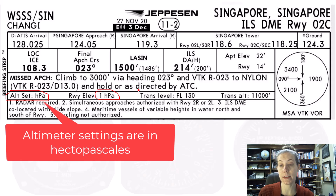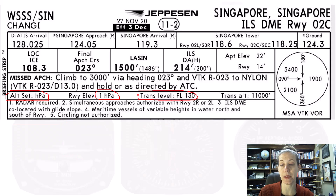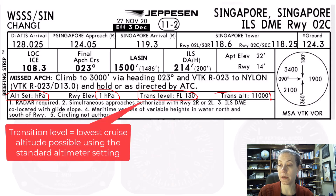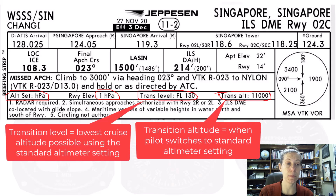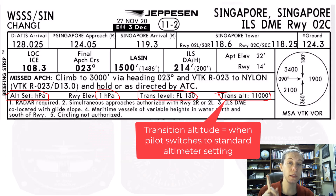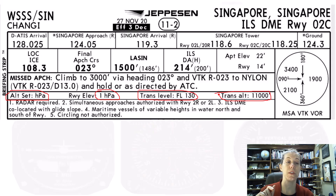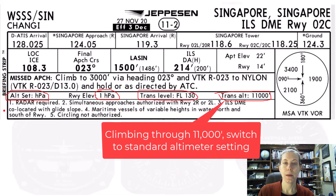The transition level here is at flight level 130, and the transition altitude is at 11,000 feet. So it's not the same as in the U.S. where essentially both say 18,000 feet. On this chart, the transition altitude is at 11,000 feet — much lower than we're used to in the U.S. What that means is that climbing through 11,000 feet, I am going to switch my altimeter setting to the standard setting.